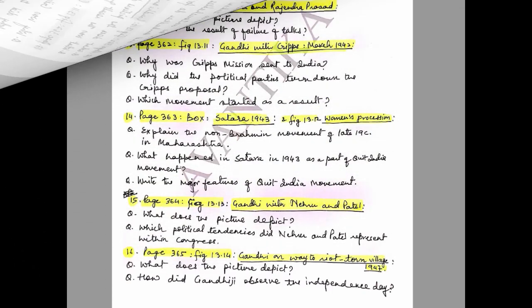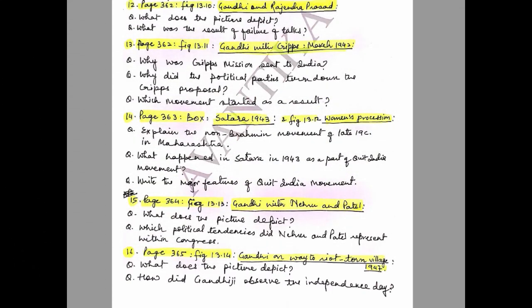Question 14: Page 363 box — Satara 1943, and Figure 13.12 — Women's Procession. Questions: Explain the non-Brahmin movement of late 19th century in Maharashtra. What happened in Satara in 1943 as part of the Quit India Movement? Write the major features of the Quit India Movement.